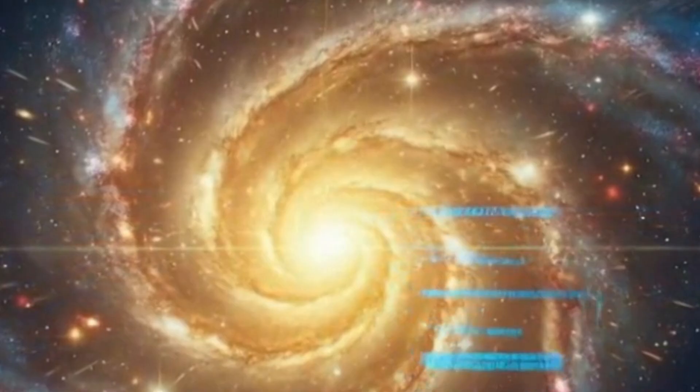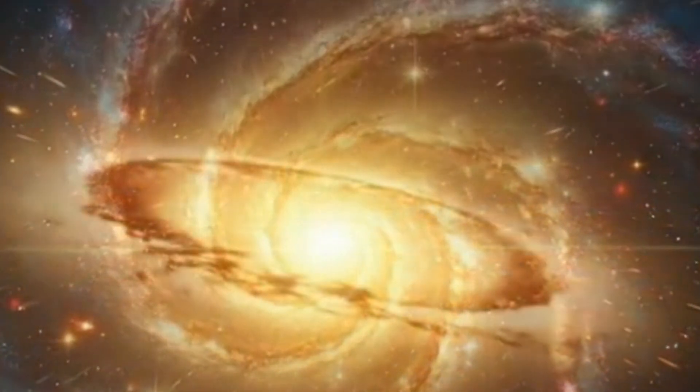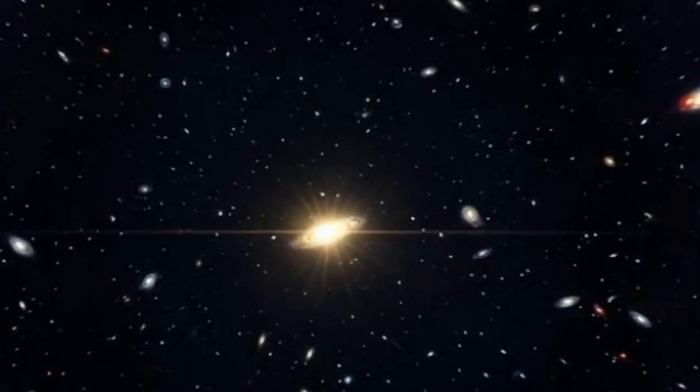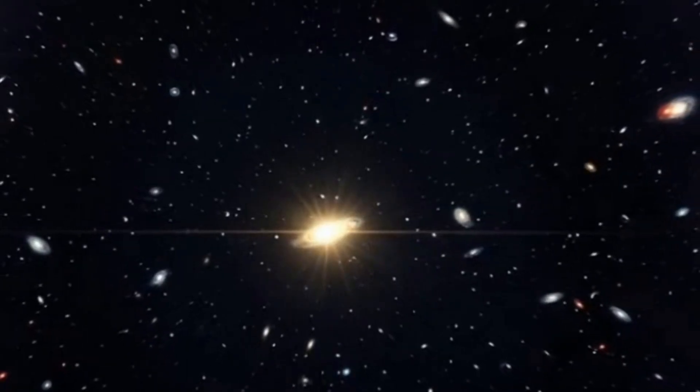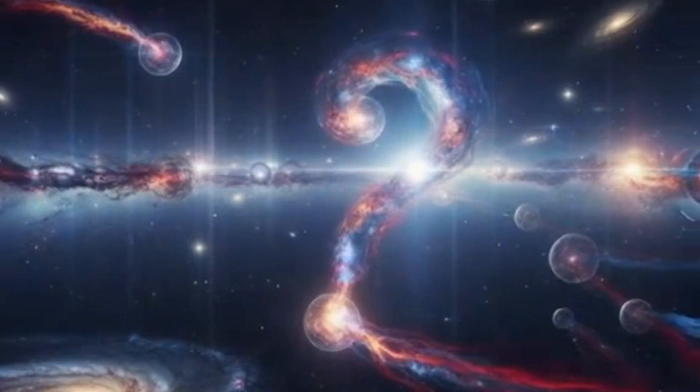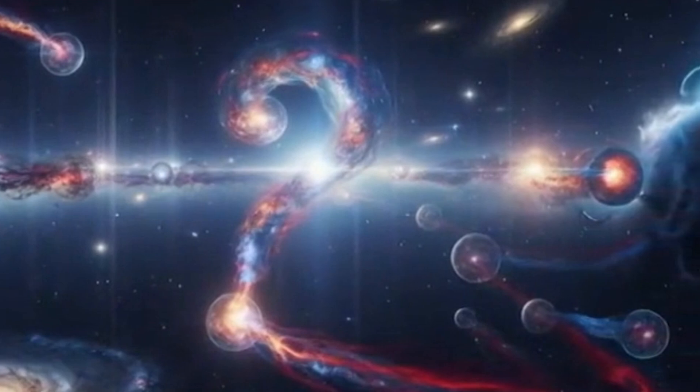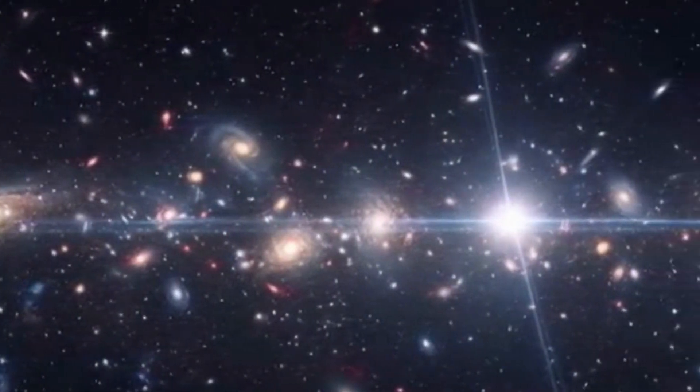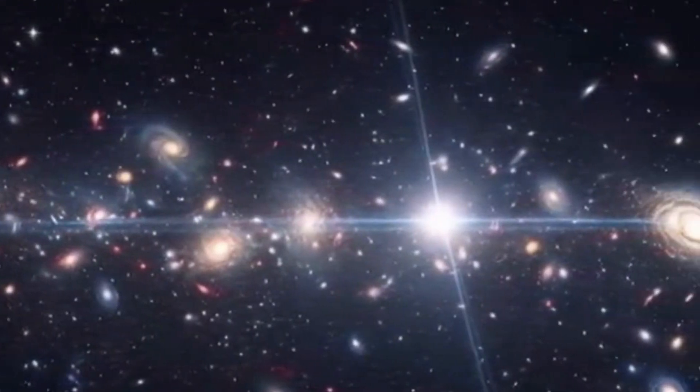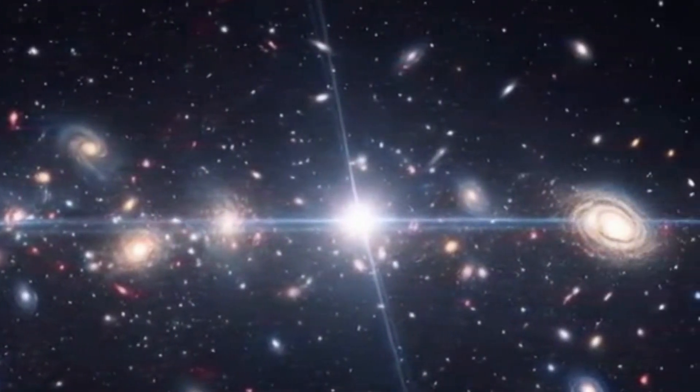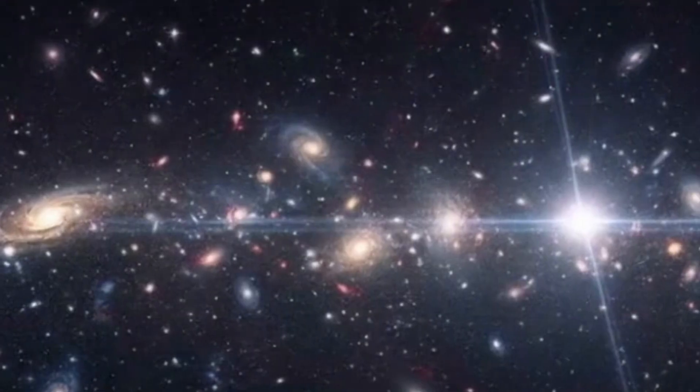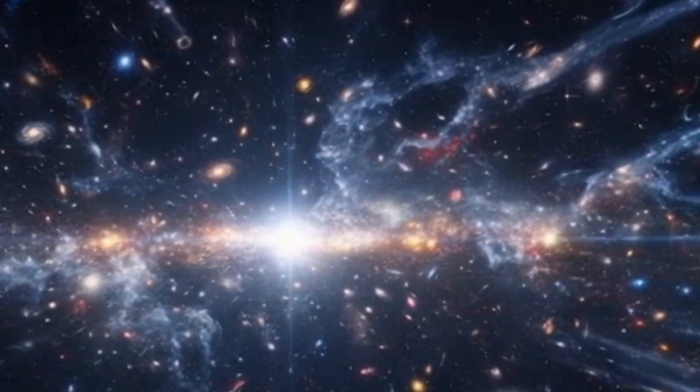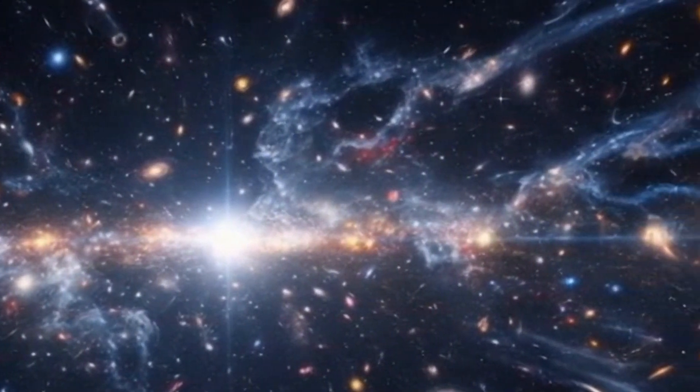Something extraordinary is happening in the early universe, something our theories can't yet explain. Across Webb's deep field images, astronomers are finding thousands of strange luminous objects unlike anything seen before. They don't behave like galaxies, they don't fit into our models, and yet they're everywhere. For the first time, Webb has peered beyond the cosmic dark ages, into the era when light itself was new, and what it found has left scientists astonished.